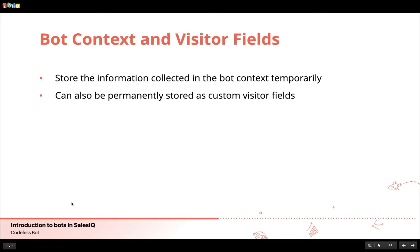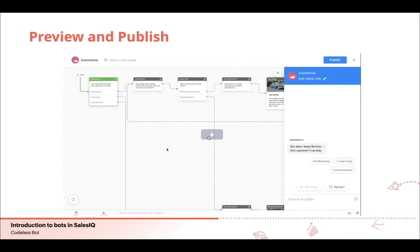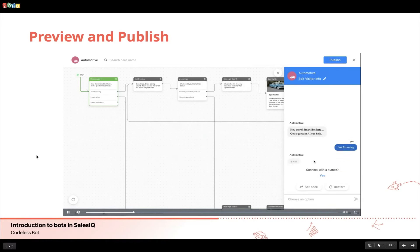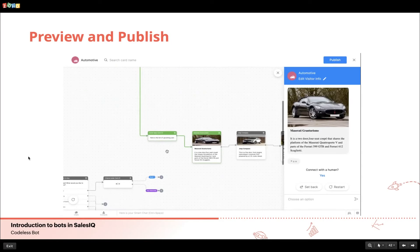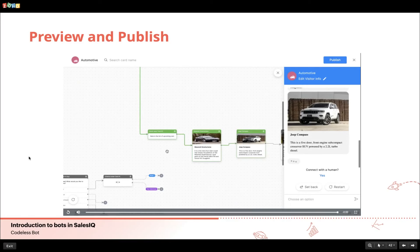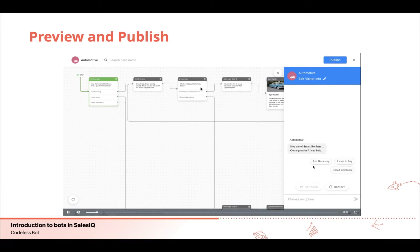You can store information collected in the bot context temporarily until the visitor or bot ends the conversation, and use it across flows to make decisions. You can also permanently store information as custom visitor fields, available for use in integrated services like Zoho Desk, Zoho CRM, and Salesforce. When you create your flow, you can check it in real time using the bot preview option and then publish it upon completion. Click the eye icon at the bottom right corner of the board, and once the bot flow is complete, click publish on the top right corner.